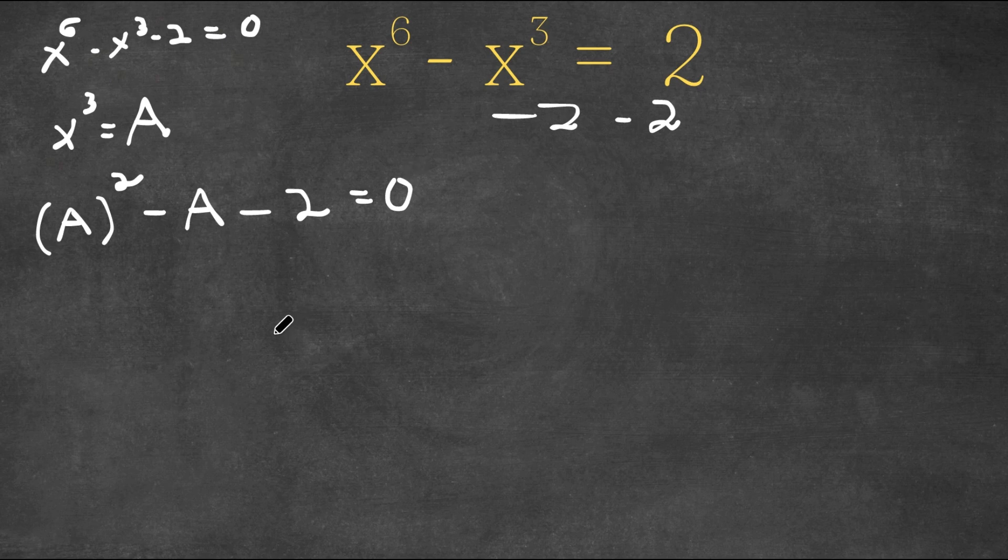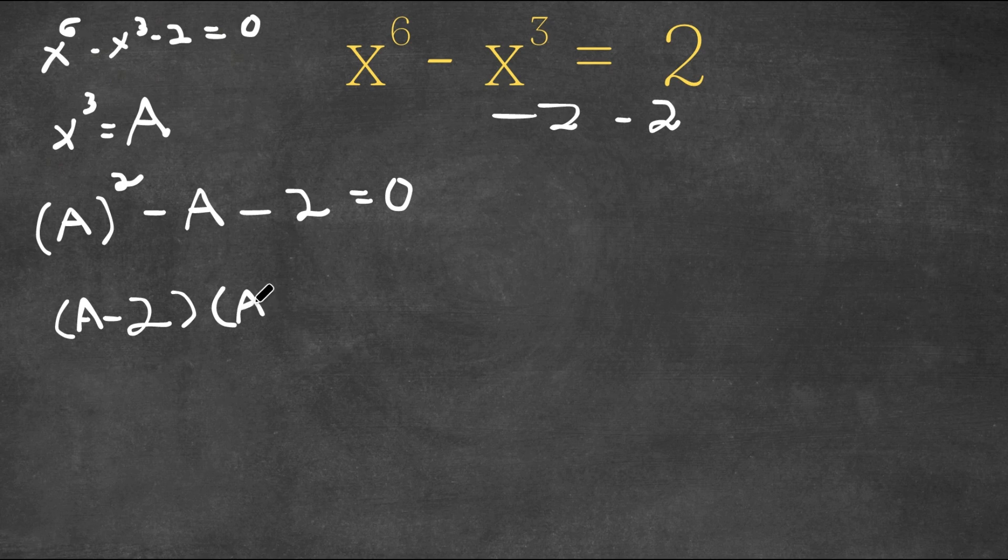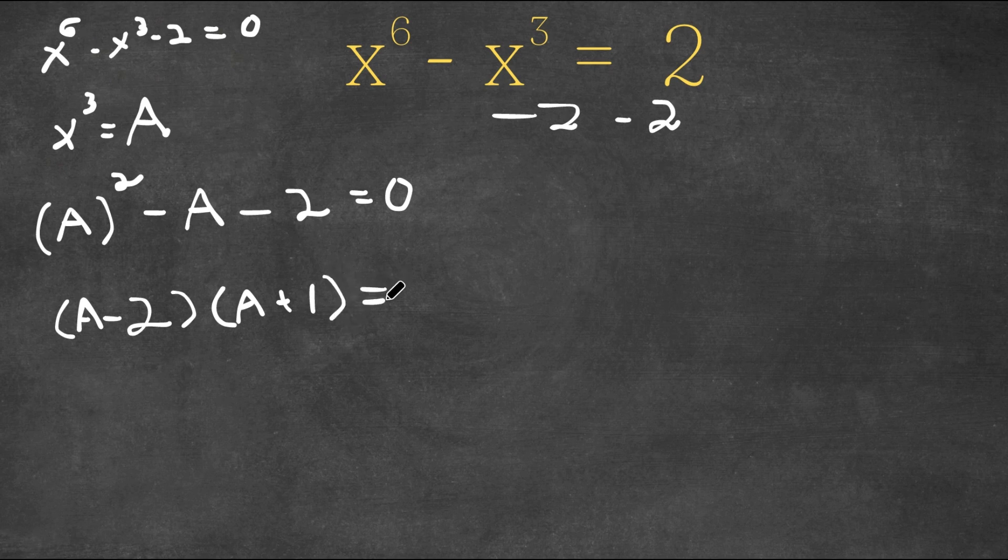So now as you see, we have a quadratic equation. So now if we factor this, we get a minus 2 times a plus 1 is equal to 0.